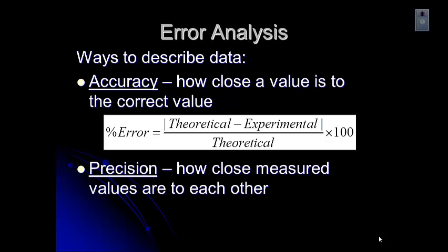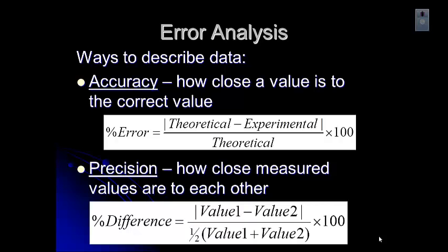The other thing we have to look at is something called precision, and that tells us how close measured values are to each other. If you were doing a lab and measured two different things about a substance, you would want to compare those values using percent difference. The formula is the difference between the two values — value one minus value two — divided by one-half times value one plus value two, which is the average of the two values.